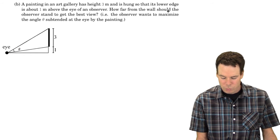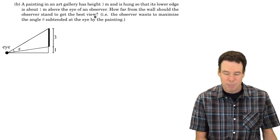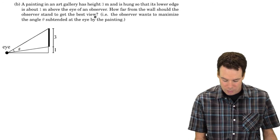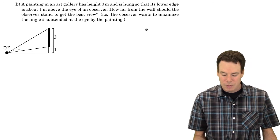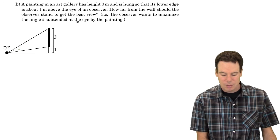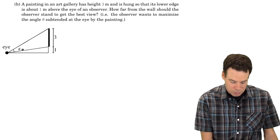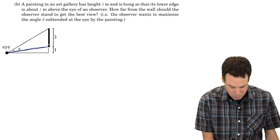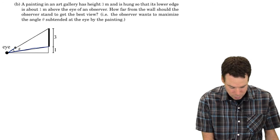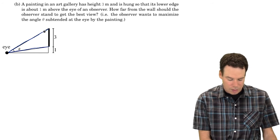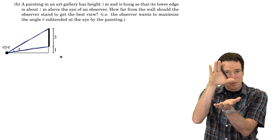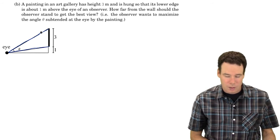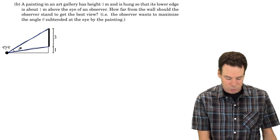So we want to know how far from the wall should the observer stand to get the best view. What does it mean to get the best view of a painting? It means that the observer wants to maximize the angle theta subtended at the eye by the painting. Here I've indicated this angle theta, and it is this angle between the viewing lines to the bottom of the painting and the top of the painting. That's where the painting looks the largest to you and hence you get the best view of it.